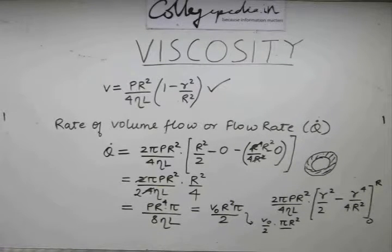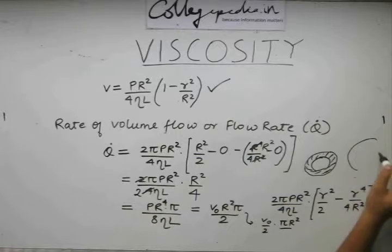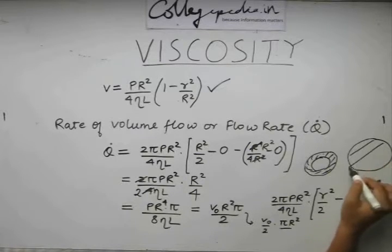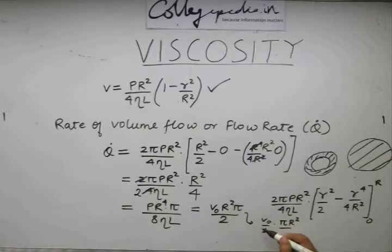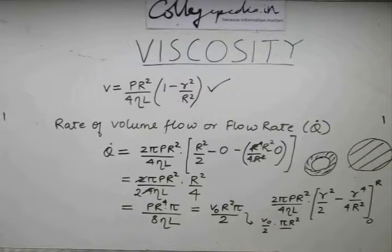If we look at this expression, this is nothing but some velocity v0 by 2 times pi r square. What is pi r square? Pi r square is nothing but the cross sectional area of this pipe. What is this v0 by 2? This is just half of the maximum velocity in the center. This, if we calculate separately, we will find that this is the average velocity through the pipe.